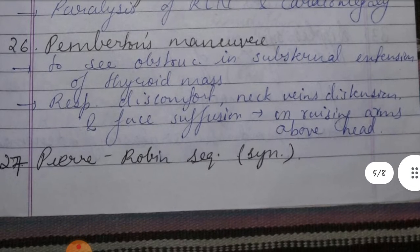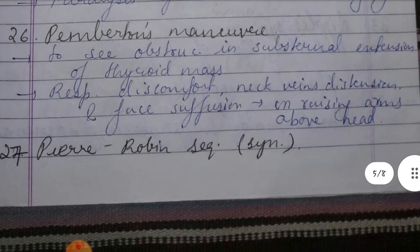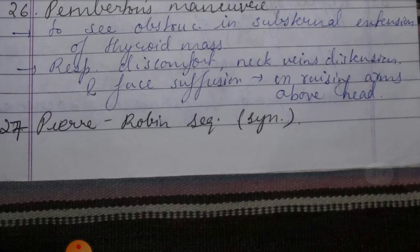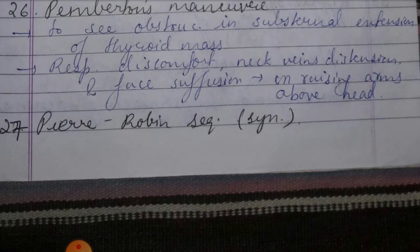Twenty-sixth is Pemberton's maneuver — obstruction from sub-sternal extension of thyroid mass, causing respiratory discomfort, neck vein distension, and facial congestion when raising the arms above the head.